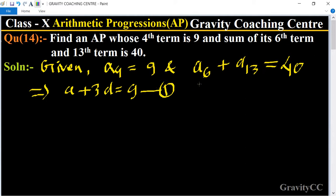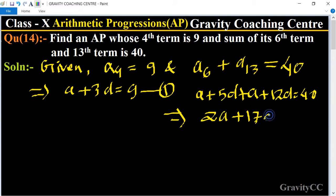And a₆ = a + 5d plus a₁₃ = a + 12d equals 40. This implies that 2a + 17d = 40, so this is the second equation.